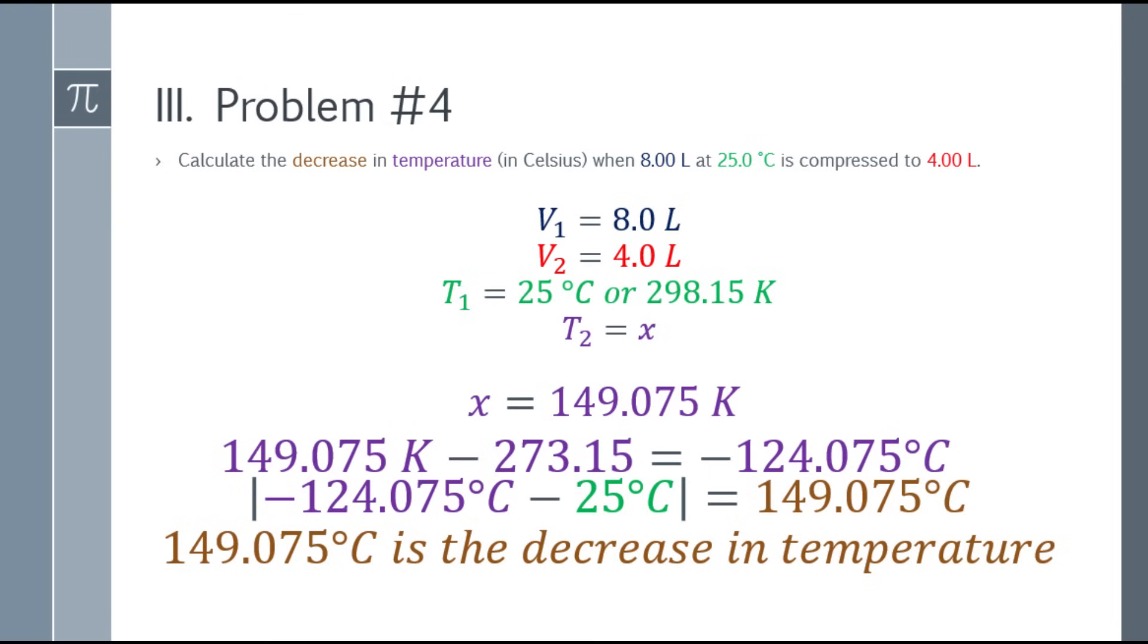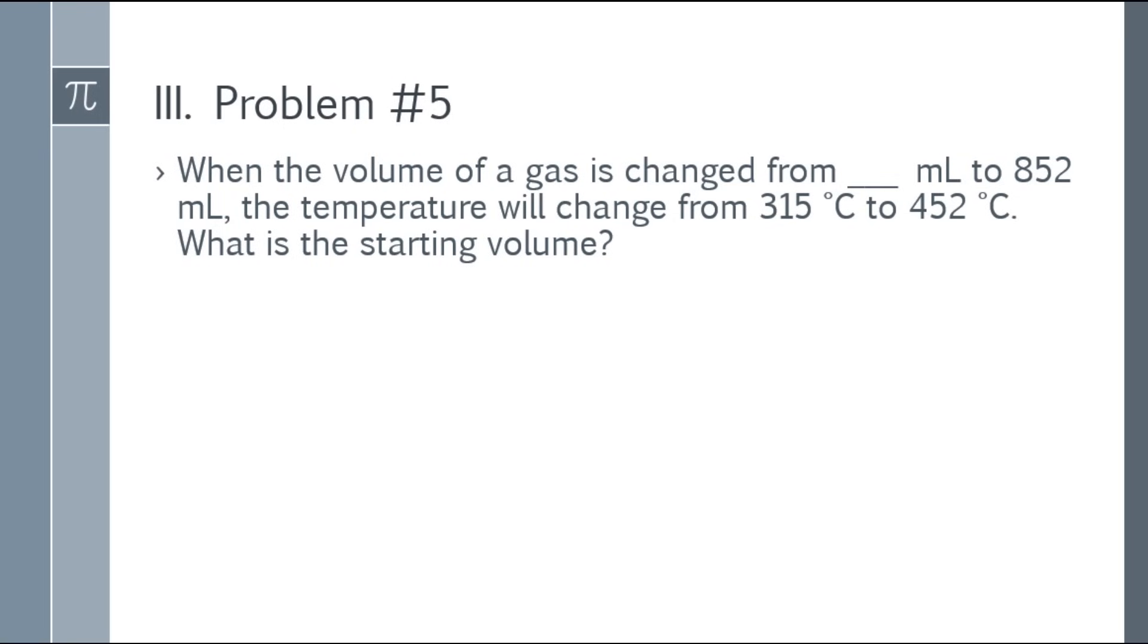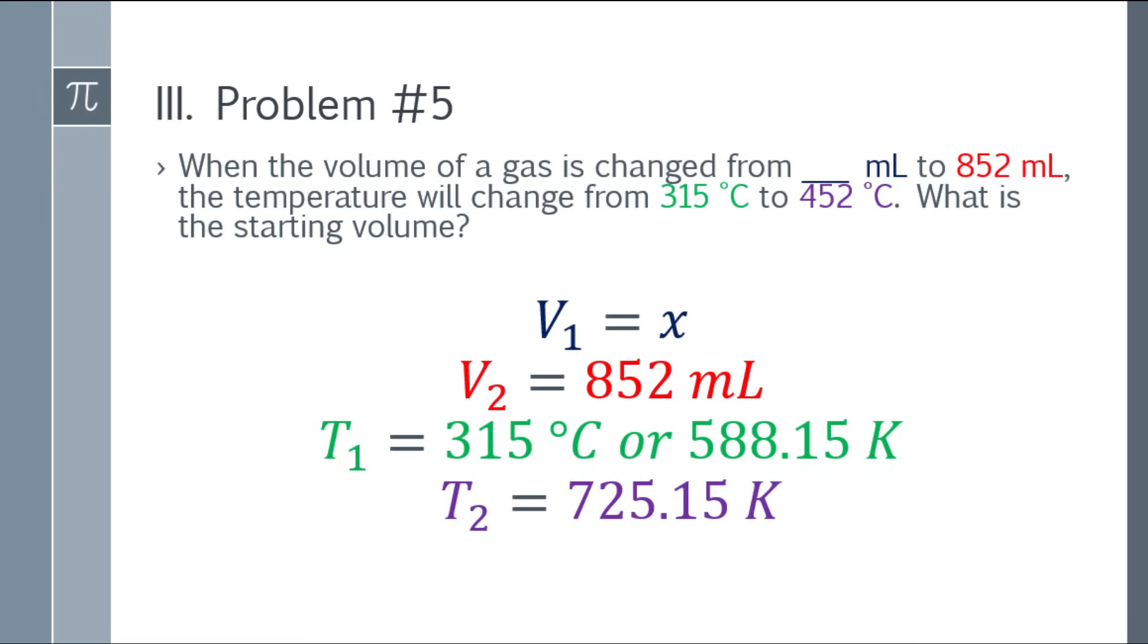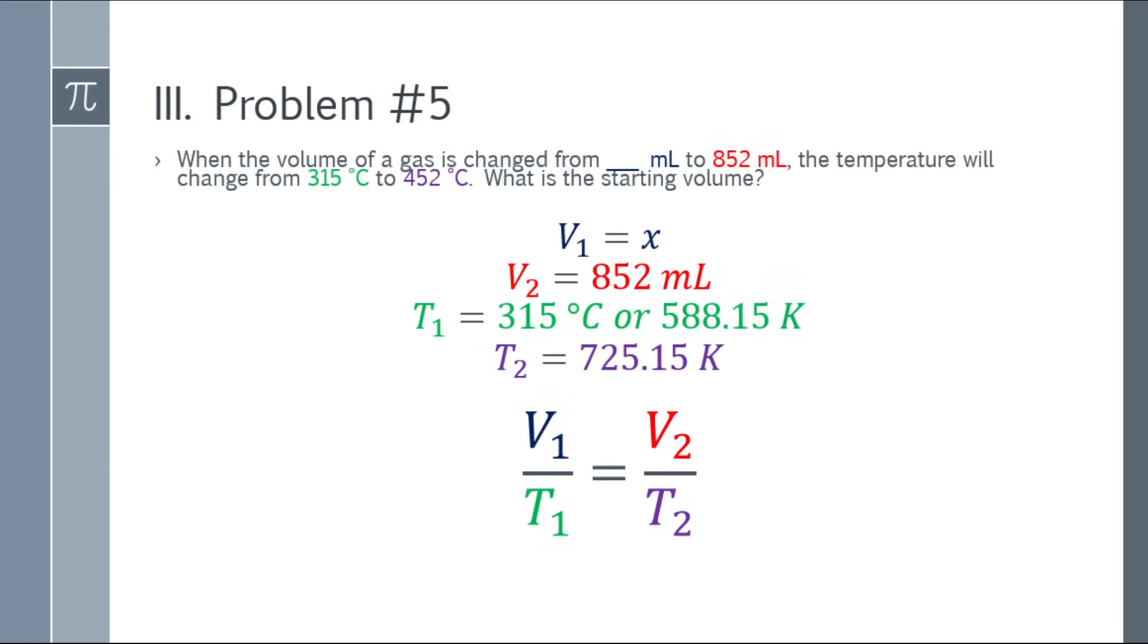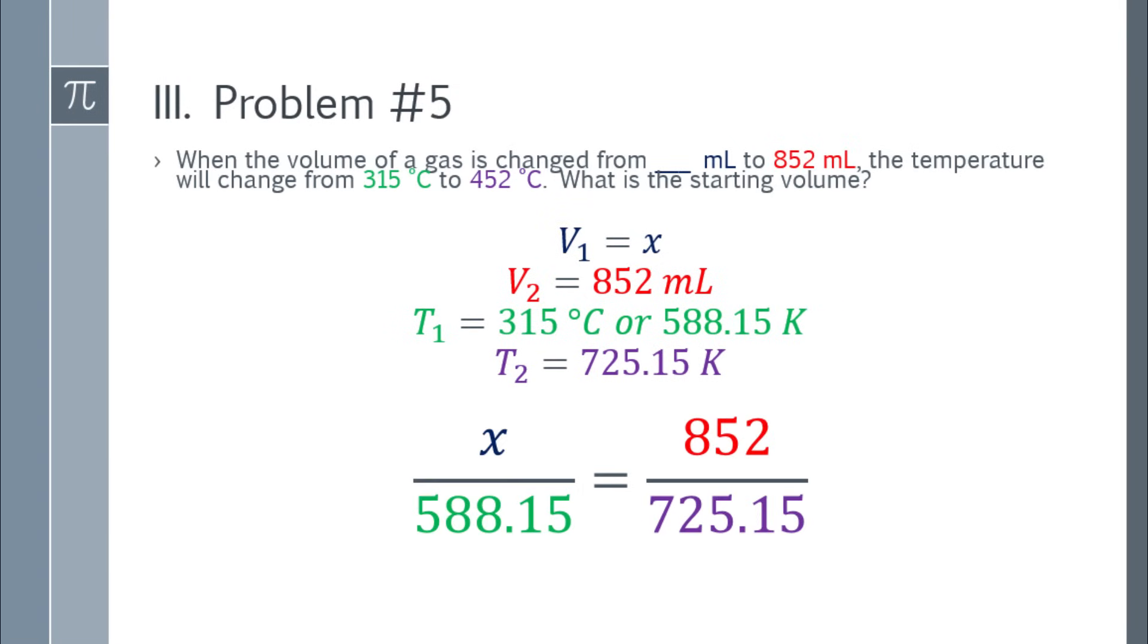Let's move to number five. Final problem. When the volume of a gas is changed from blank mL to 852 mL, changing from 315 degrees Celsius to 452 degrees Celsius, what is the starting volume? Same process. List the given, write the formula, and substitute the values. So we have x divided by 588.15 equals 852 over 725.15.